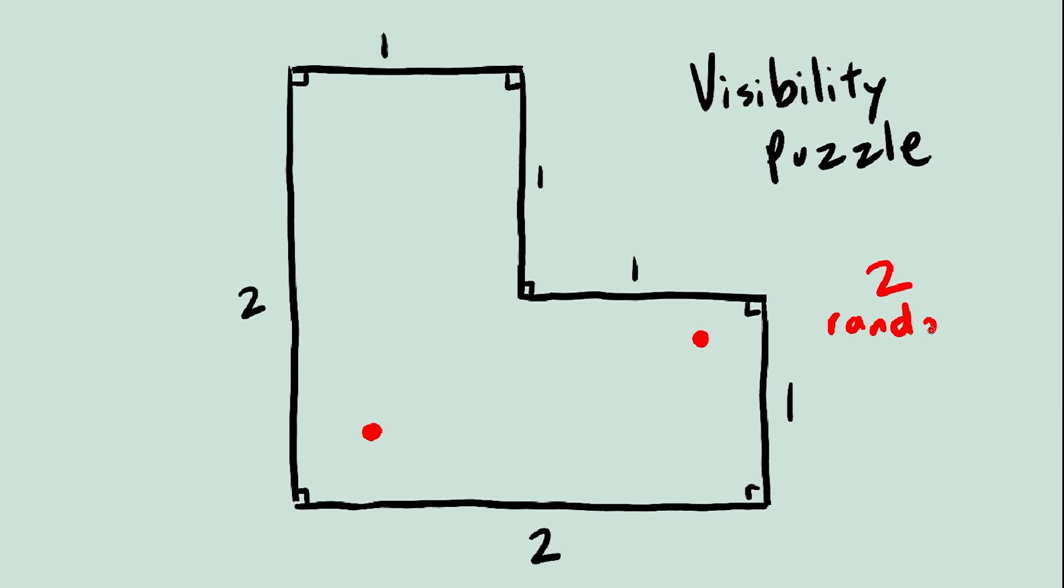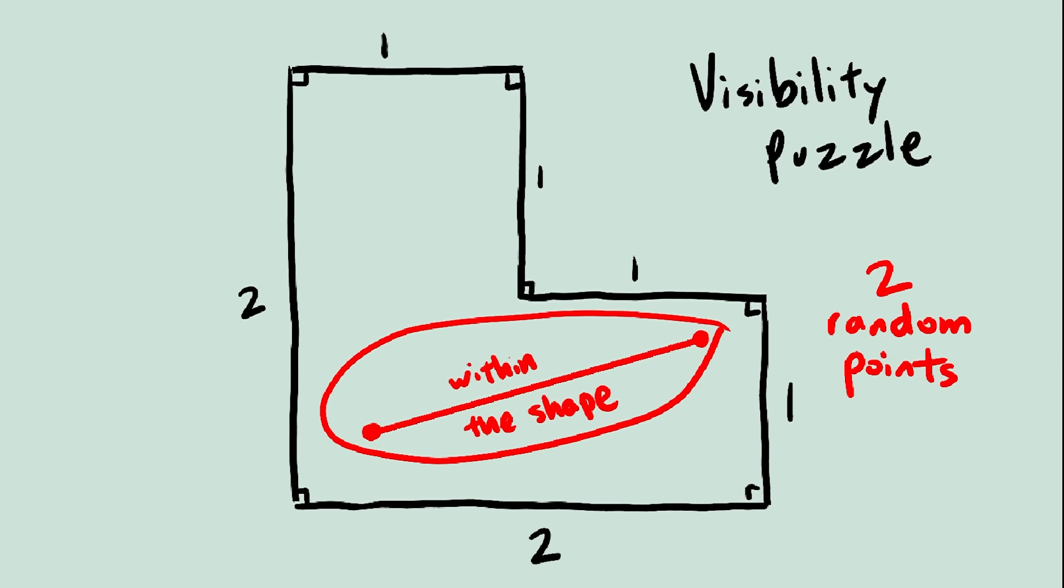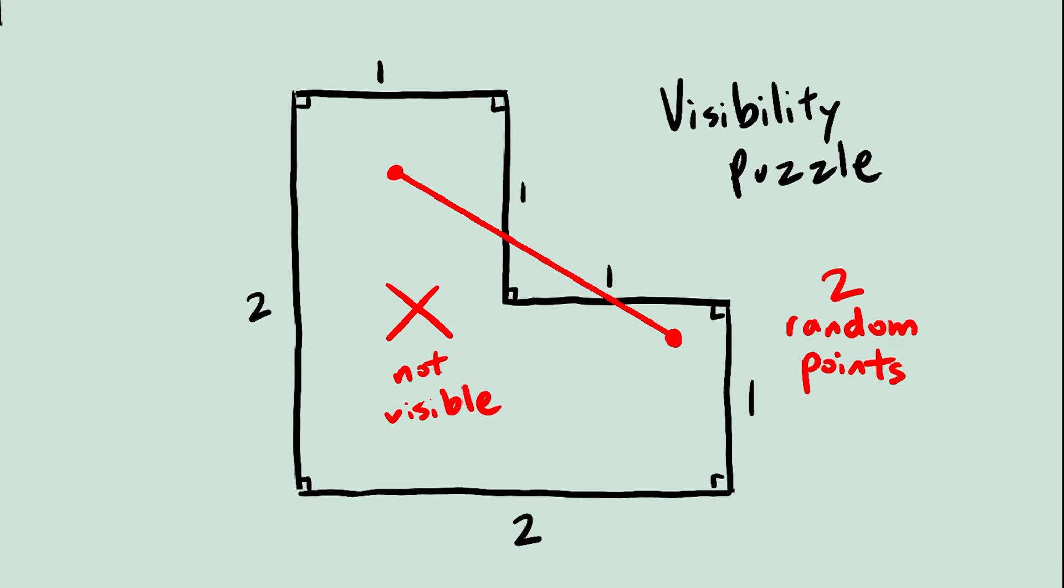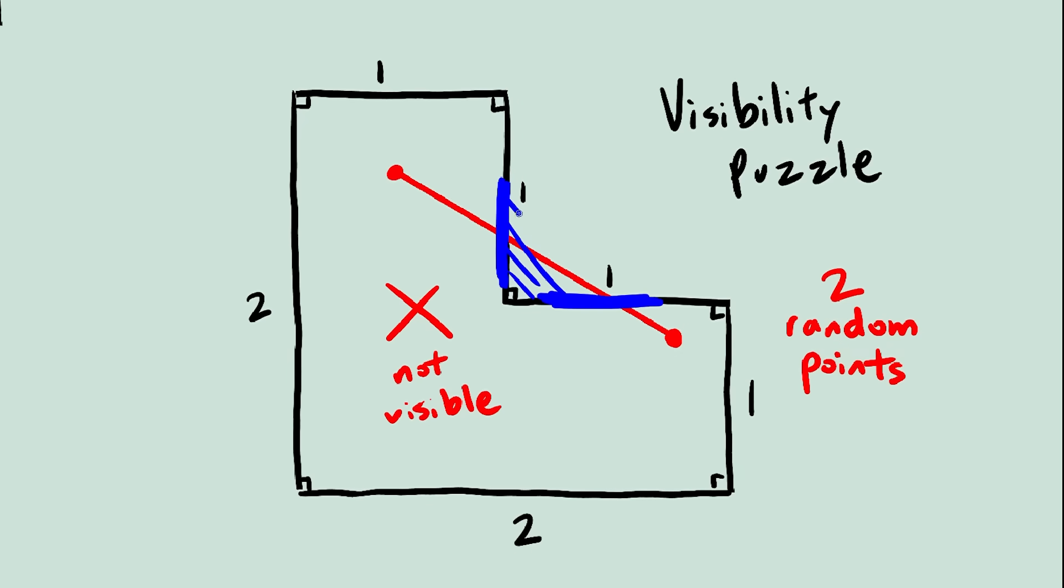To be more rigorous, if you pick two random points inside this shape, what is the probability that the line segment between those two points is completely within the shape? So this counts as entirely within the shape, but this does not. The line of sight between two people is blocked by the wall here.